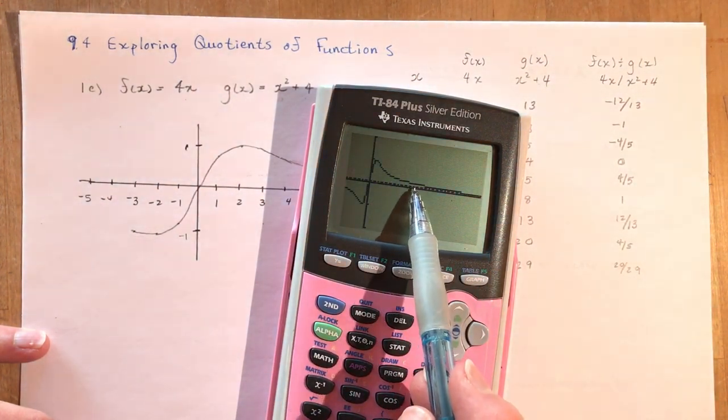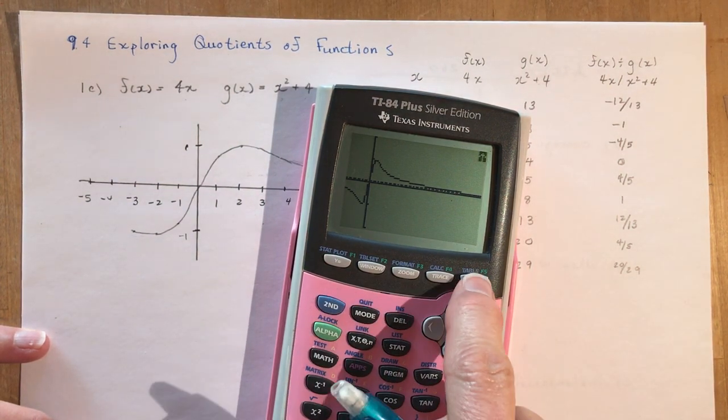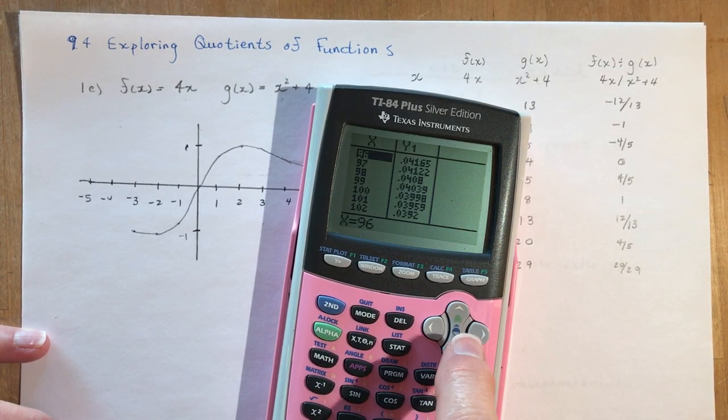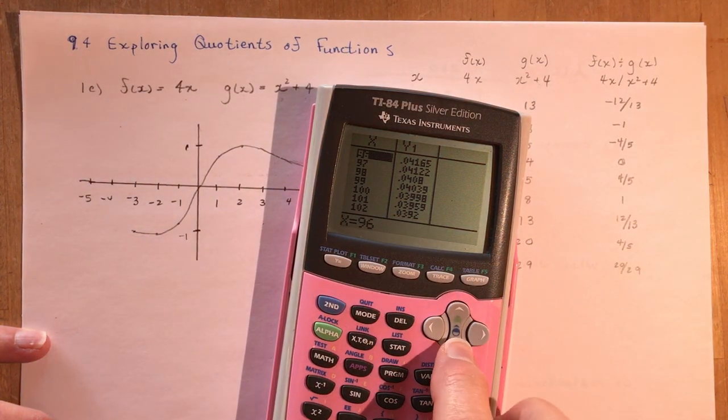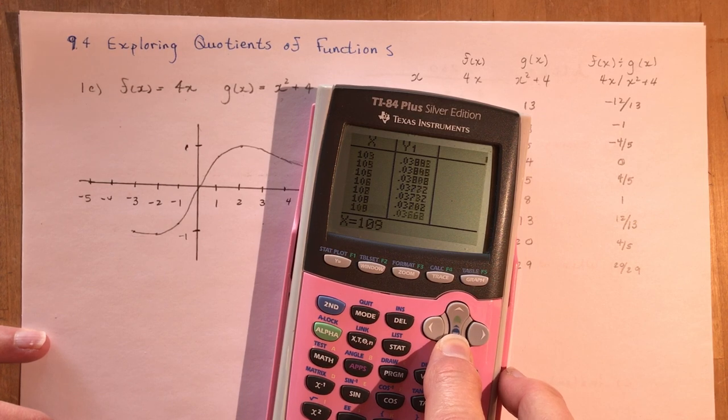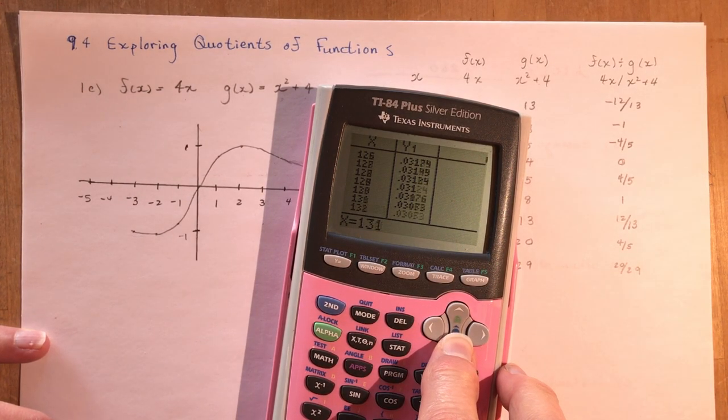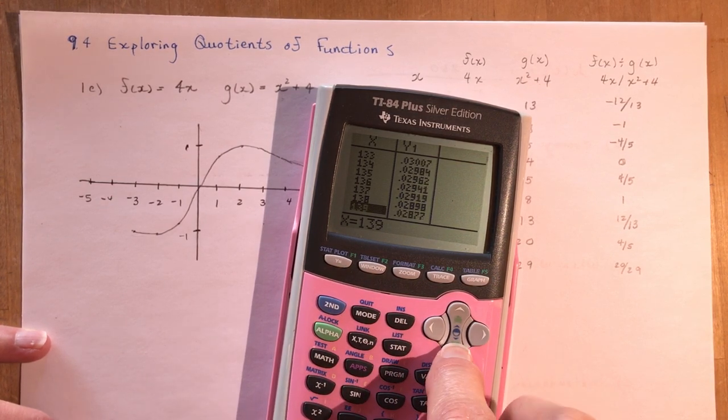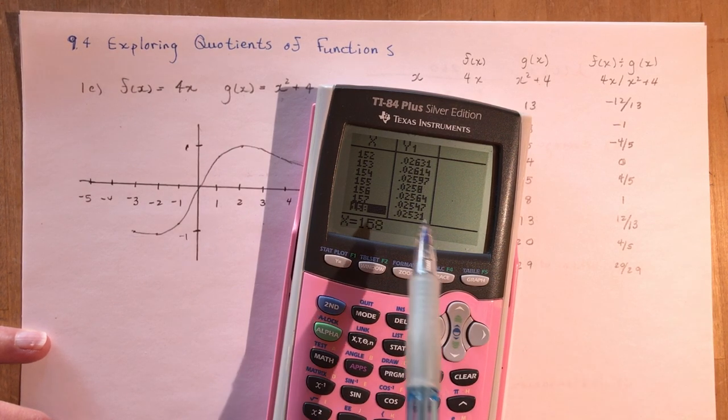And then you can see what's happening here as we go out—it's approaching zero. You can also check on your table. Second function over the graph, here is the table. If you look at 100, you can see it's 0.03998, and you can keep scrolling down and you'll see that as you go down farther and farther it's getting closer and closer to zero.